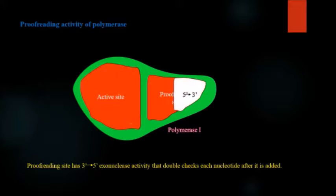In case of polymerase one, it has additional five-prime to three-prime exonuclease activity. If this part of the polymerase one is removed, then it is known as Klenow fragment.